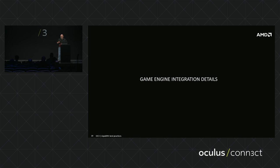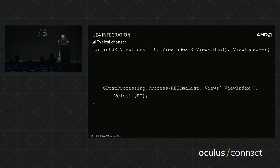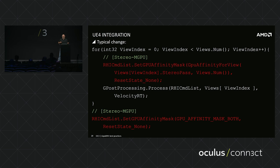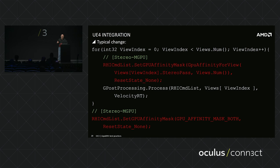For game engine integration: in Unreal there's a loop by eyes — left eye, right eye, then processing. Integration is simple: set the affinity mask depending on eye, with logic inside so that if multi-GPU is not available, the additions do nothing and the code safely runs on a single GPU. The process function is submitted to the first GPU, then to the second GPU with different parameters, and the mask set to 3 broadcasts to both.